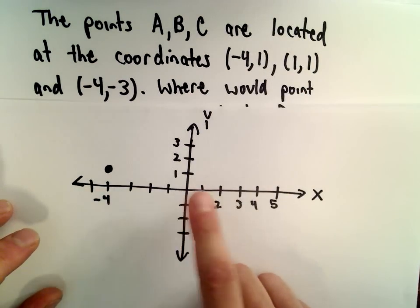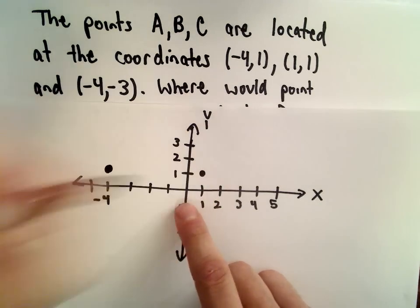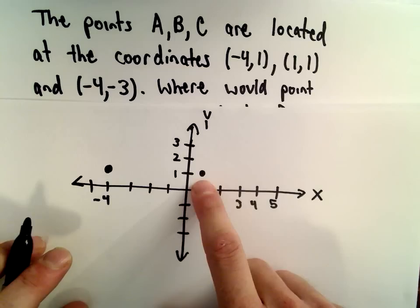The point (1, 1) means we'll go 1 unit to the right and then 1 unit up. So 1 unit to the right, 1 unit up, and that's the coordinates for point (1, 1).